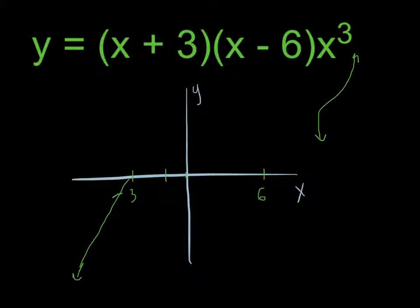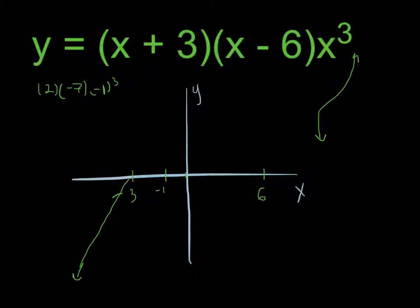So if we plug in negative 1, we're going to end up getting 2 times negative 7 times negative 1 cubed. That's going to be a positive times a negative times a negative, which is of course going to be positive. And so this will continue through negative 3, and then it must hit the x-axis again at 0.